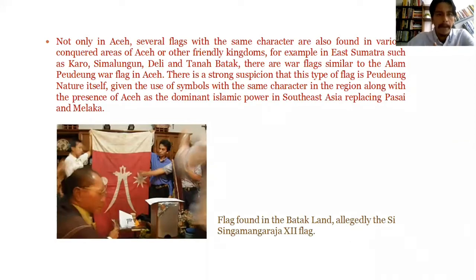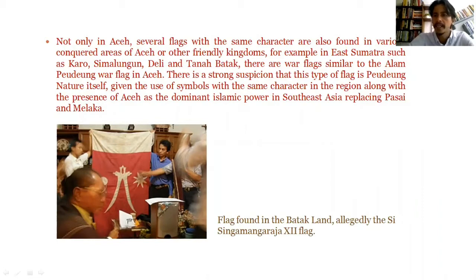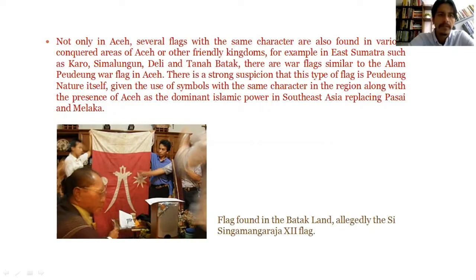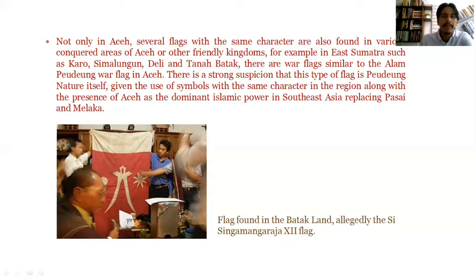Not only in Aceh, several flags with similar characteristics are also found in various areas around Aceh or other friendly kingdoms — for example, in Sumatra: Karo, Simalungun, Deli, and Tanah Batak. There are war flags similar to the Alam Peudeung war flag in Aceh. There is a strong suspicion that this type of flag originated from Aceh itself, given the use of similar symbols across the region and the presence of Aceh as the dominant Islamic power in Southeast Asia, replacing Pasai and Malacca.